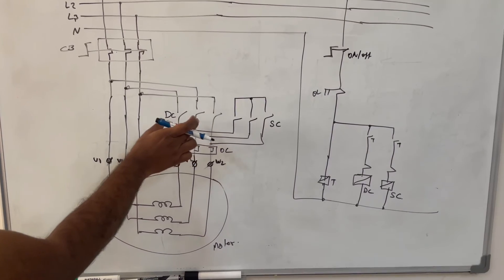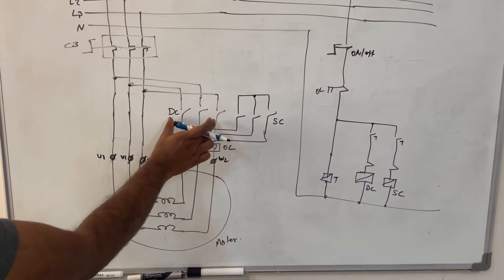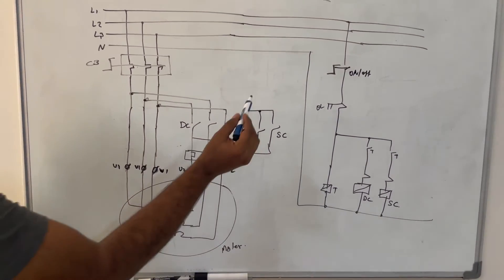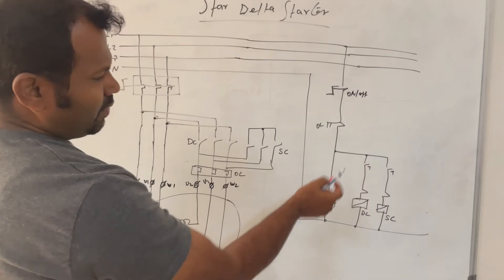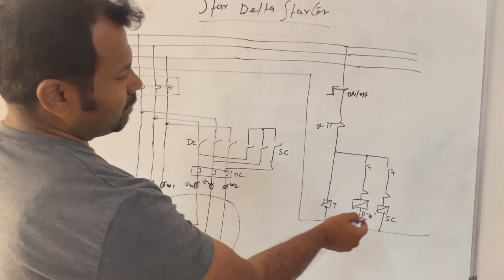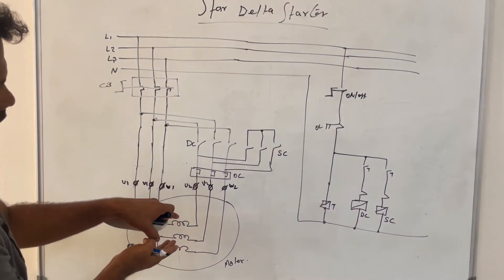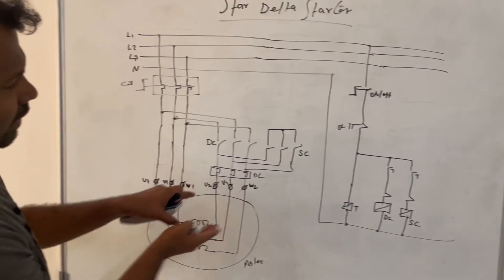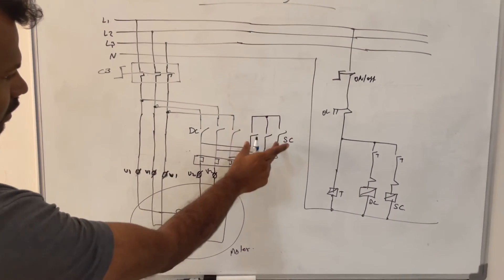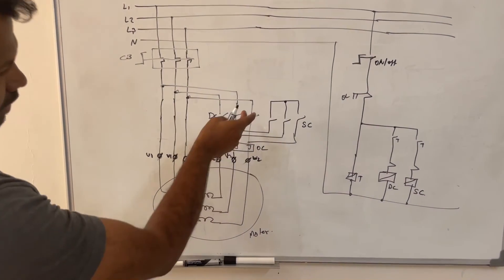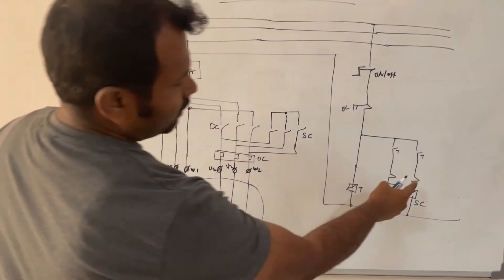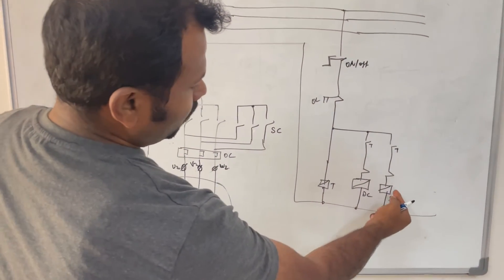Now once you put switch on, timer will energize. The timer first will close star contactor, so the motor will run in star connection. Once this star contactor closes, motor will drain in star connection. After that, star contactor will be stopped and the delta contactor will be switched on.